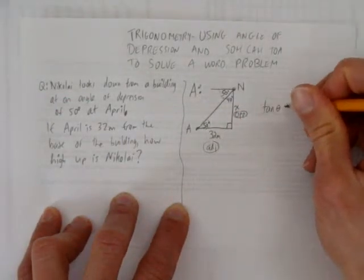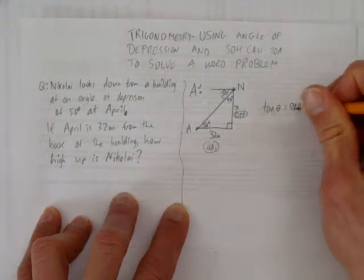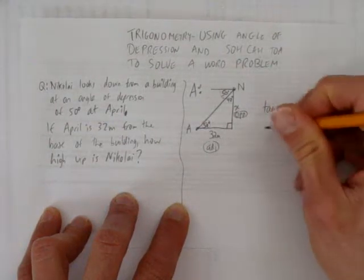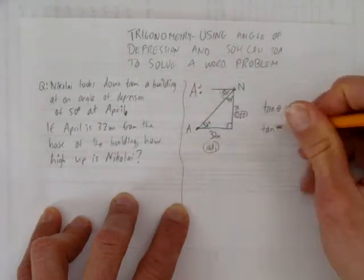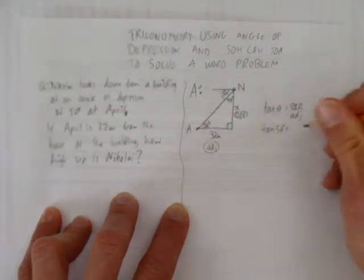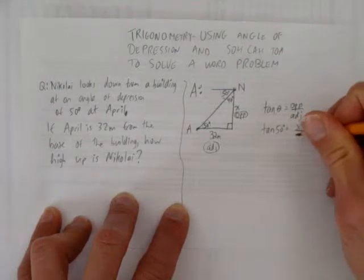Tangent. You can look at SOHCAHTOA to be sure of that. Tangent equals opposite over adjacent. In other words, the tangent of our angle, 50 degrees, equals the opposite side x over 32.